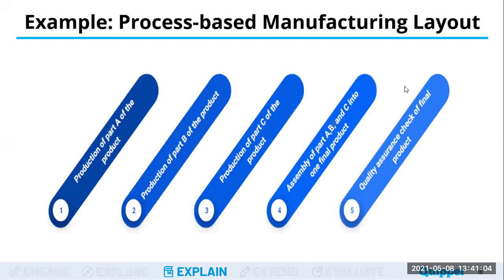An example of a process-based manufacturing layout: production of Part A of the product — like the monitor of a computer — then Part B, such as other laptop components, and so on until all parts are assembled. The last step is quality assurance, where someone checks the quality of the product before it is released to the store or market.